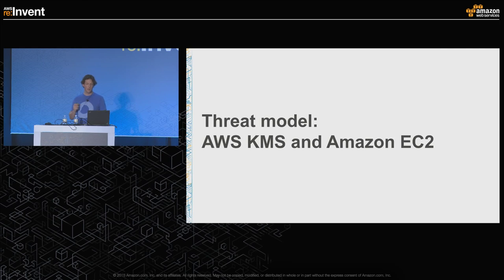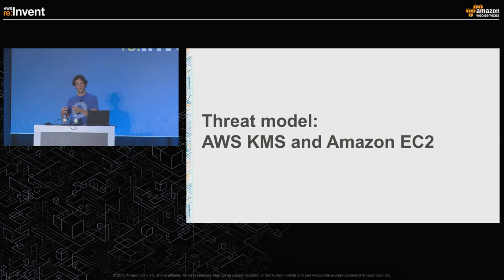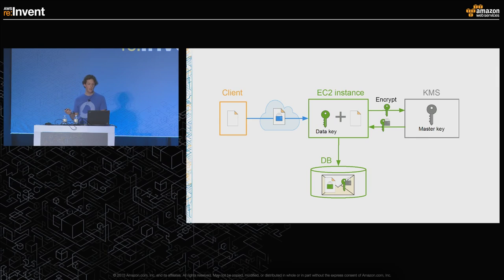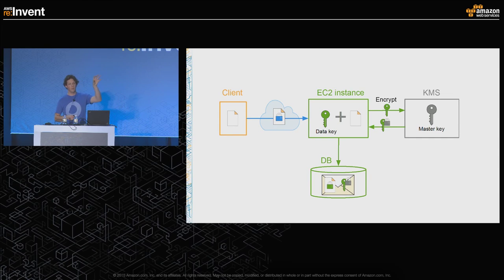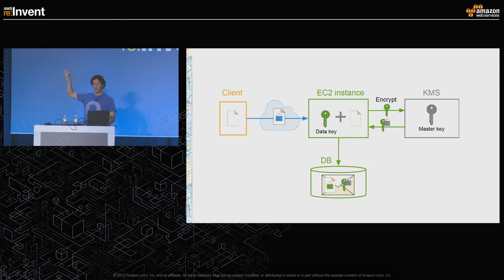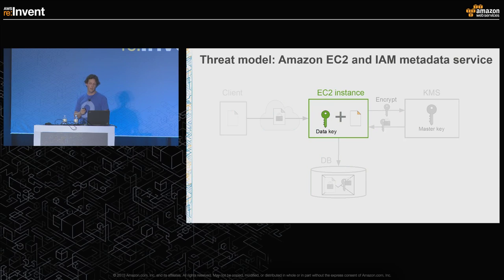Now let's dig into the threat model and take a look at the security posture that KMS has in our architecture. If we look at the diagram, we're replacing the generic concept of 'your service' with specifically running within EC2, and replacing the generic concept of a key server with KMS. Let's dig into Amazon EC2 first and see the model they're using there.